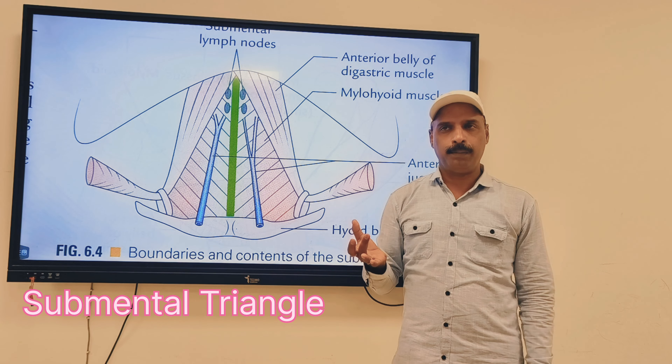Next is the digastric triangle, which is situated in the submandibular region. The boundary: the area between the hyoid bone and the base of the mandible is the submandibular region, and the triangle here is called the submandibular triangle or the digastric triangle.